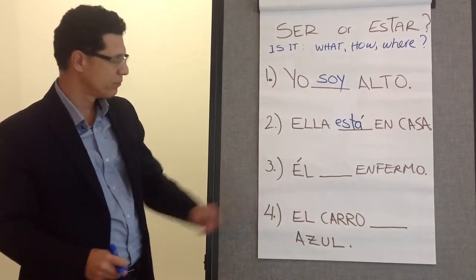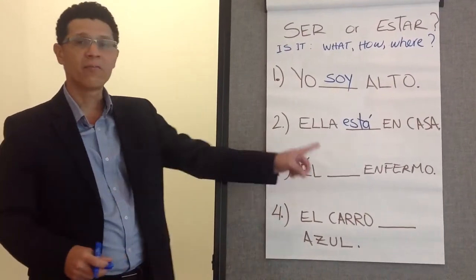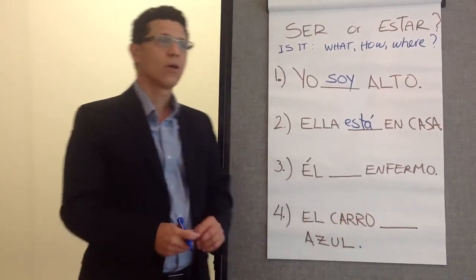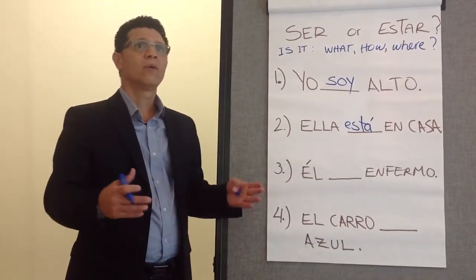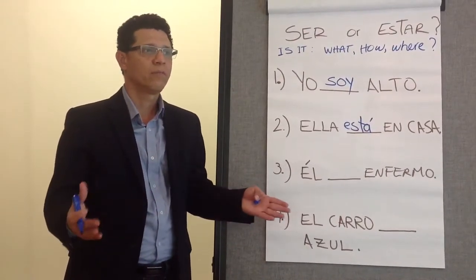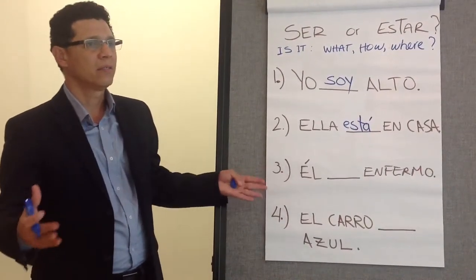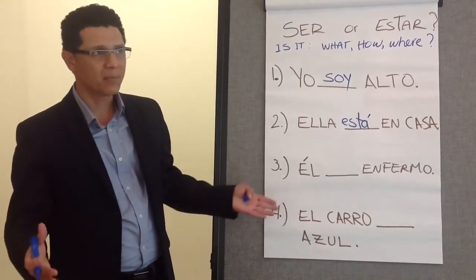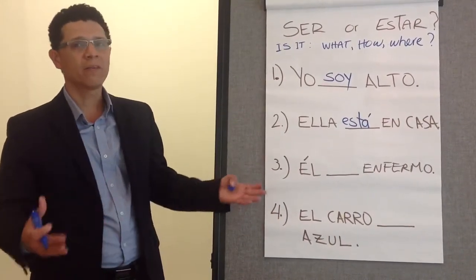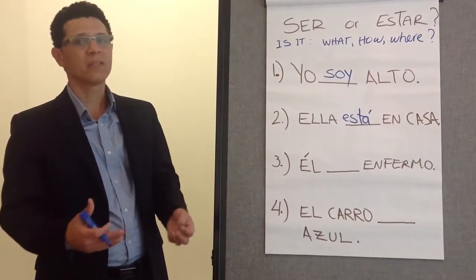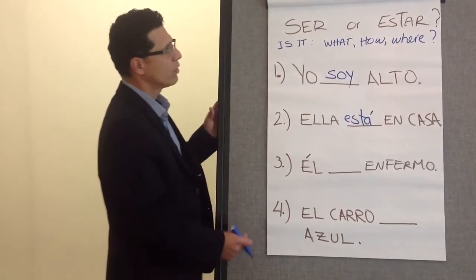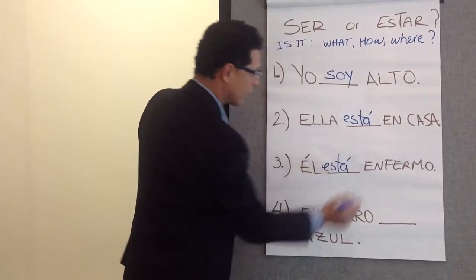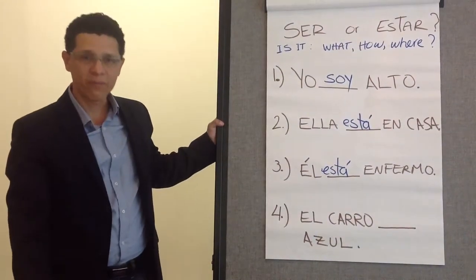Example number three: 'El __ enfermo' — he is sick. Is it where he is? No. Is it what he is — is he a sick person? Or is it how he feels — he feels sick? Obviously, it's how he feels. So you have to use estar. El está enfermo.